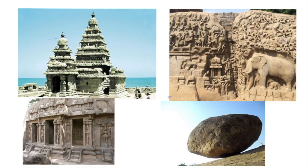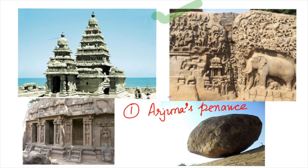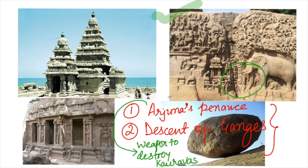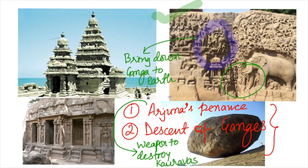After the Pancha Rathas, we see another architectural form: the largest open-air rock relief. Here Arjuna's Penance or Tapasya and the Descent of the Ganges are depicted. As per the Mahabharata, one narration describes Arjuna praying to Lord Shiva to obtain a divine weapon to destroy the Kauravas. The second narration describes King Bhagirath standing on one leg and praying for the river Ganga to be brought down to earth.